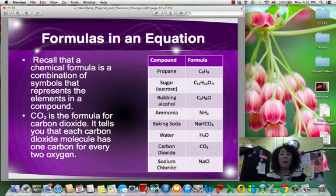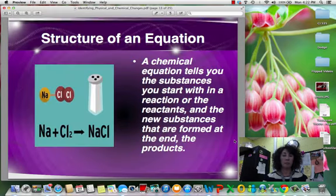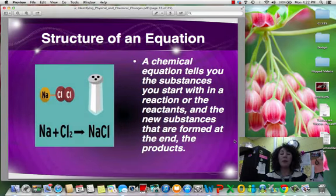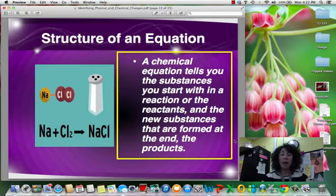Now, we talked about how to write formulas. And we know that the chemical formula for a compound is just a combination of the symbols that represent the elements in that compound. And, of course, we have our subscripts that show us the ratio of the different elements in that compound. So CO2, carbon dioxide, tells us that in each carbon dioxide molecule, there's one carbon and two oxygens.